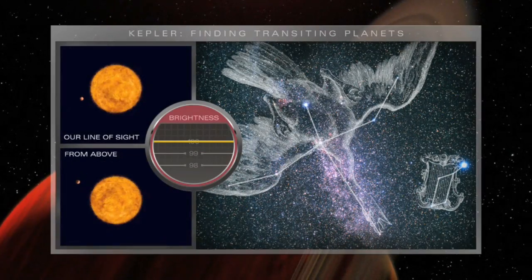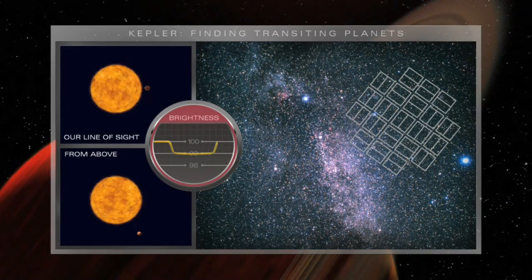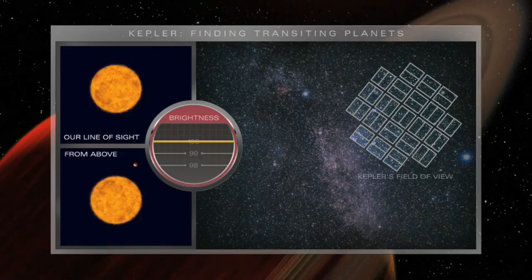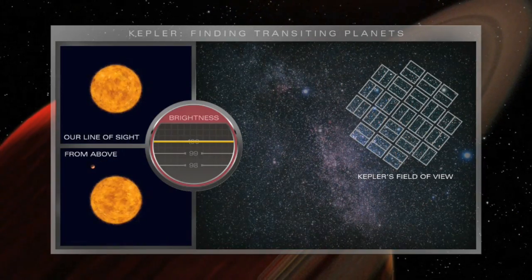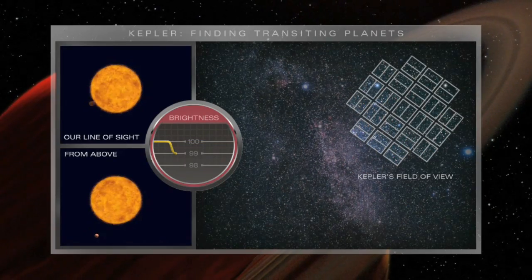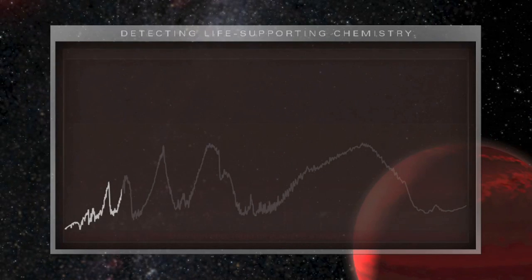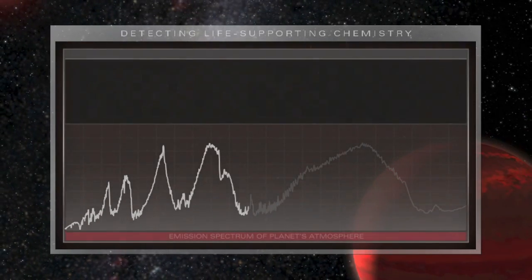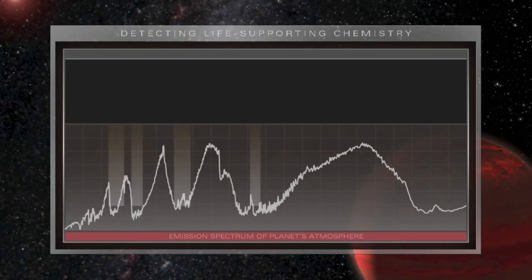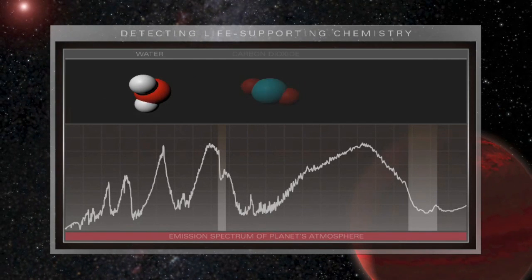NASA's Kepler mission will begin to discover planets by the thousands, watching stars dim by tiny amounts as unseen planets pass in front of them. Webb will investigate many of these planets. Scientists will be able to detect life-supporting chemistry and examine temperatures of planetary atmospheres and surfaces.